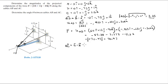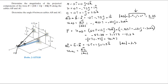Now we do the same thing for AC. The vector AC equals C minus A, which is −3i + 1j + 1.5k. The magnitude of AC is calculated the same way as AB and equals 3.5. The unit vector AC is found by dividing vector AC by its magnitude, giving −0.857i + 0.286j + 0.429k.